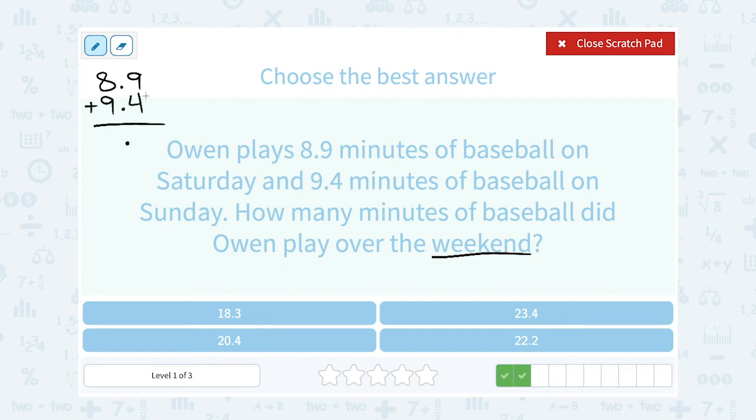So in the tenths place, 9 plus 4 gives me 13. So I'm going to write the 3, carry the 1. 8 and 9 is 17, plus the extra 1 makes it 18. So he played 18.3 minutes of baseball over the whole weekend, meaning both Saturday and Sunday.